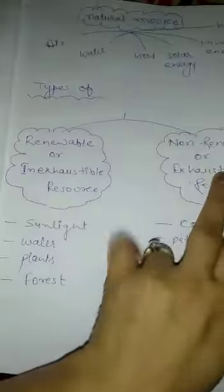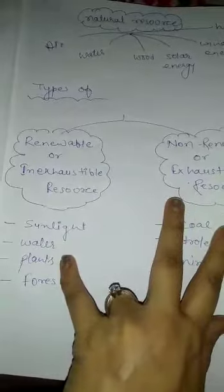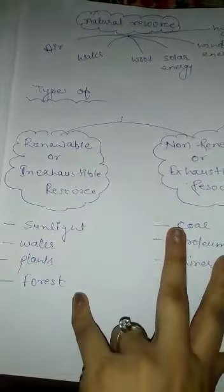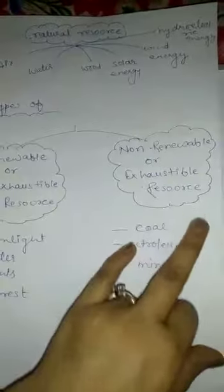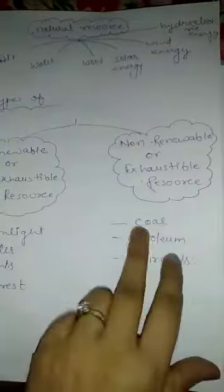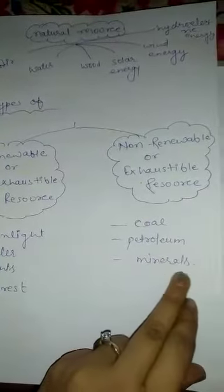Examples of renewable resources are sunlight, water, plants, and forests. Examples of non-renewable resources are coal, petroleum, and minerals.